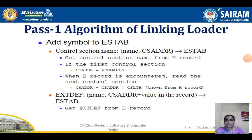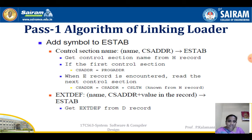Now, how symbols are added to the external symbol table: the control section name along with the control section address are both added into the EST-TAB. The control section name is obtained from the header record. For the first control section, its address is the same as the program load address.